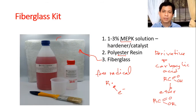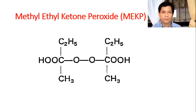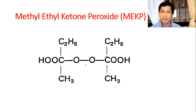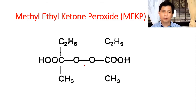Let's look at the structure of MEKP — methyl ethyl ketone peroxide. When you say peroxide, it contains an oxygen–oxygen bond. This O–O bond is very unstable because oxygen is a very electronegative atom — it wants to capture all the electrons in the bond. Both oxygen atoms are struggling to get the electrons.